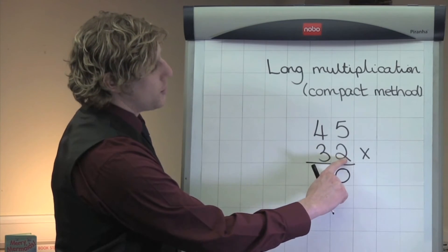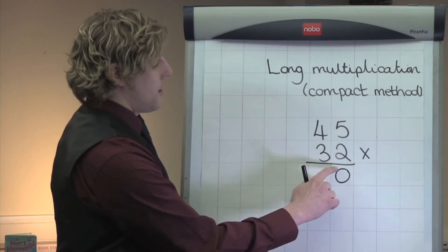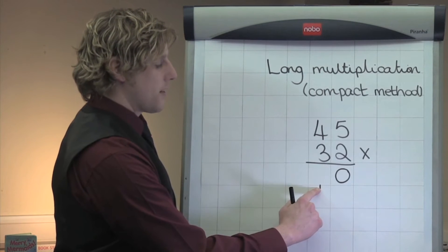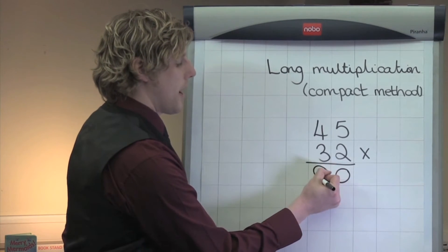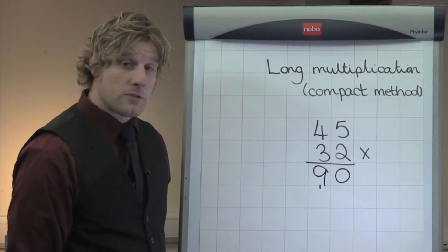Next, I'm looking at the 2 times the 4, which is 8. I add the 8 to the 110 I carried across to make it 9. That gives me 90.